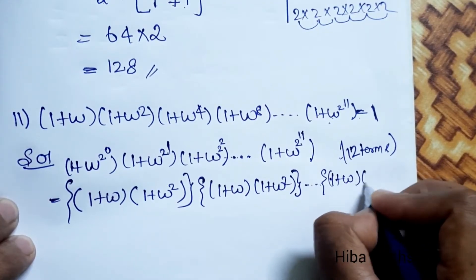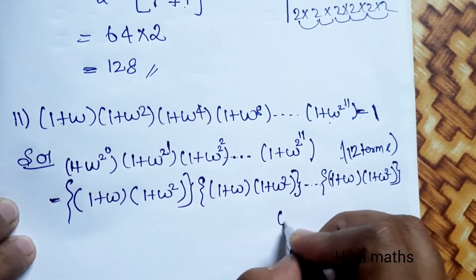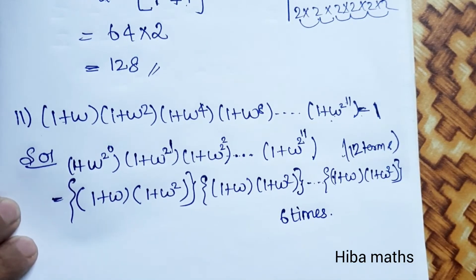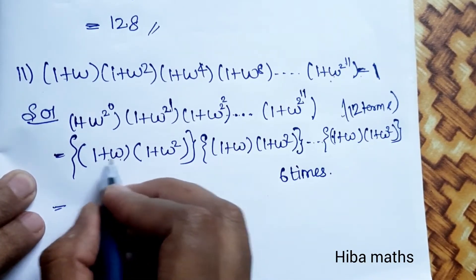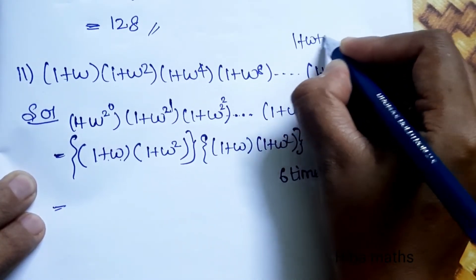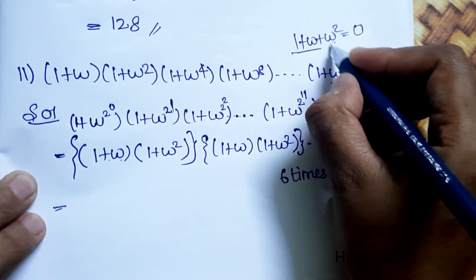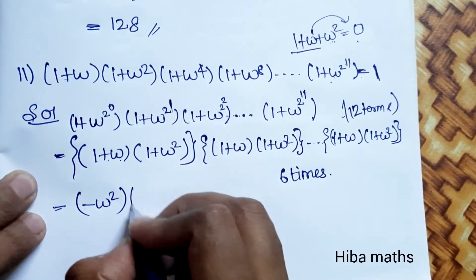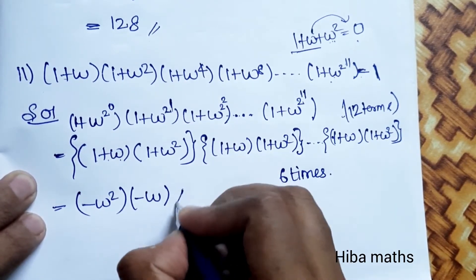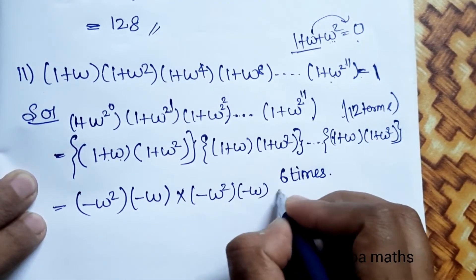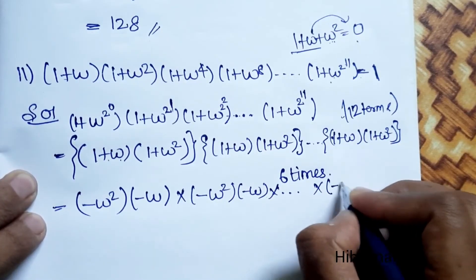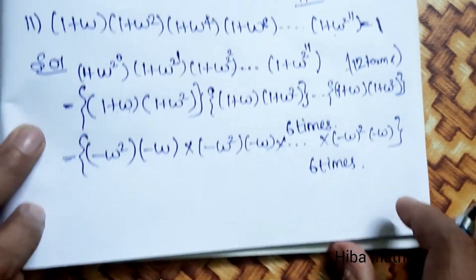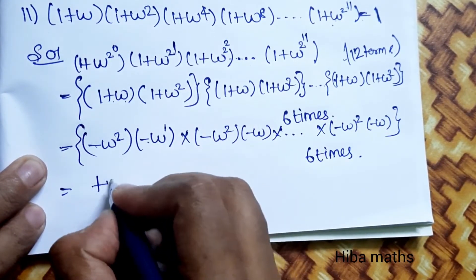The term (1 + ω)(1 + ω²) appears 6 times. Using the cube root of unity identity 1 + ω + ω² = 0, we know 1 + ω² = -ω and 1 + ω = -ω². So (1 + ω)(1 + ω²) = (-ω²)(-ω) = ω³.